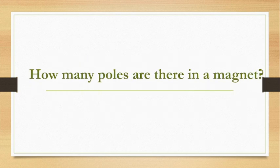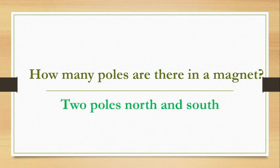How many poles are there in a magnet? The answer is two poles — north and south are the two poles present in a magnet.